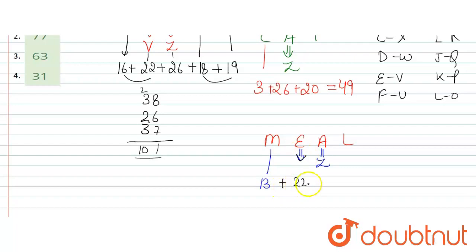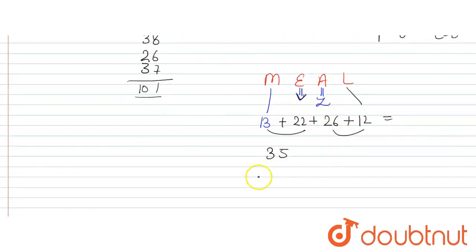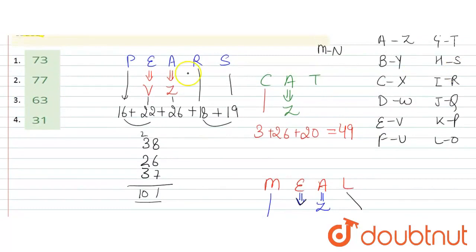V ki place value 22, Z is 26, plus L ki place value 12. So add these. Adding these gives 35, and adding these gives 38. So here you get 3, carry 1, this gives 7, that is 73, which is option number 1. So option number 1, 73 is the correct answer. Thank you.